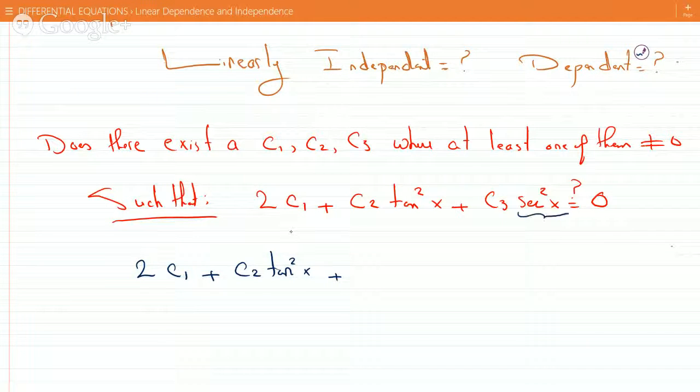Okay? Now, this secant squared is the same thing as 1 plus tan squared. So replace the secant squared with 1 plus tan squared.